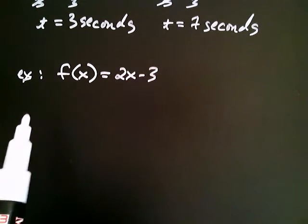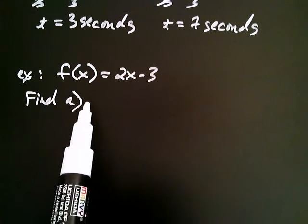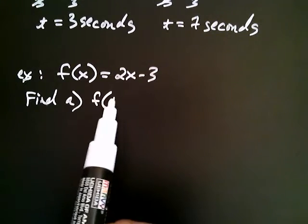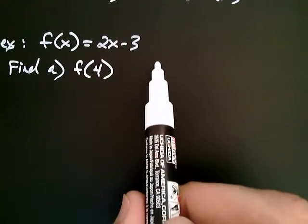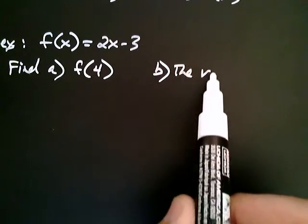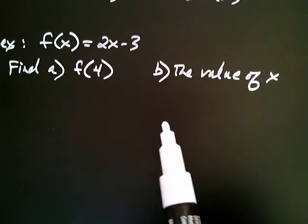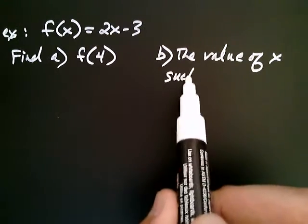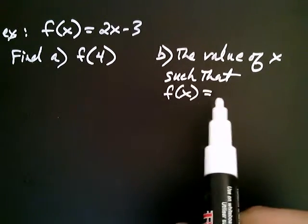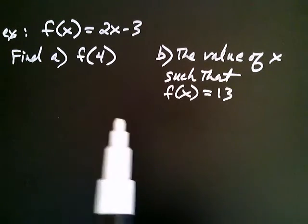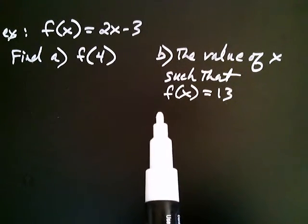For this function, let's say that we were asked two things. First, find the function at four, so find f at 4, that's part a. And part b: the value of x such that f at that x is equal to 13. The first problem corresponds to what we were doing at the beginning of the video, and the second part corresponds to what we were doing in the latter part.